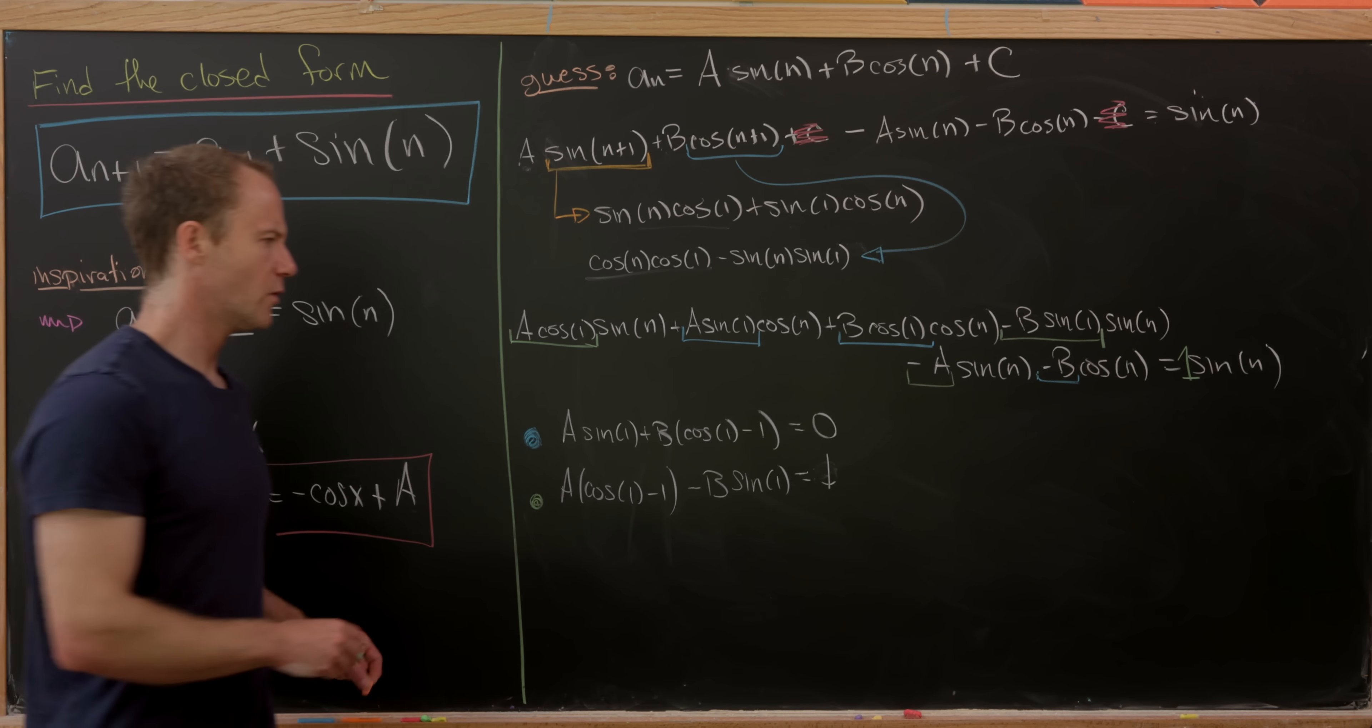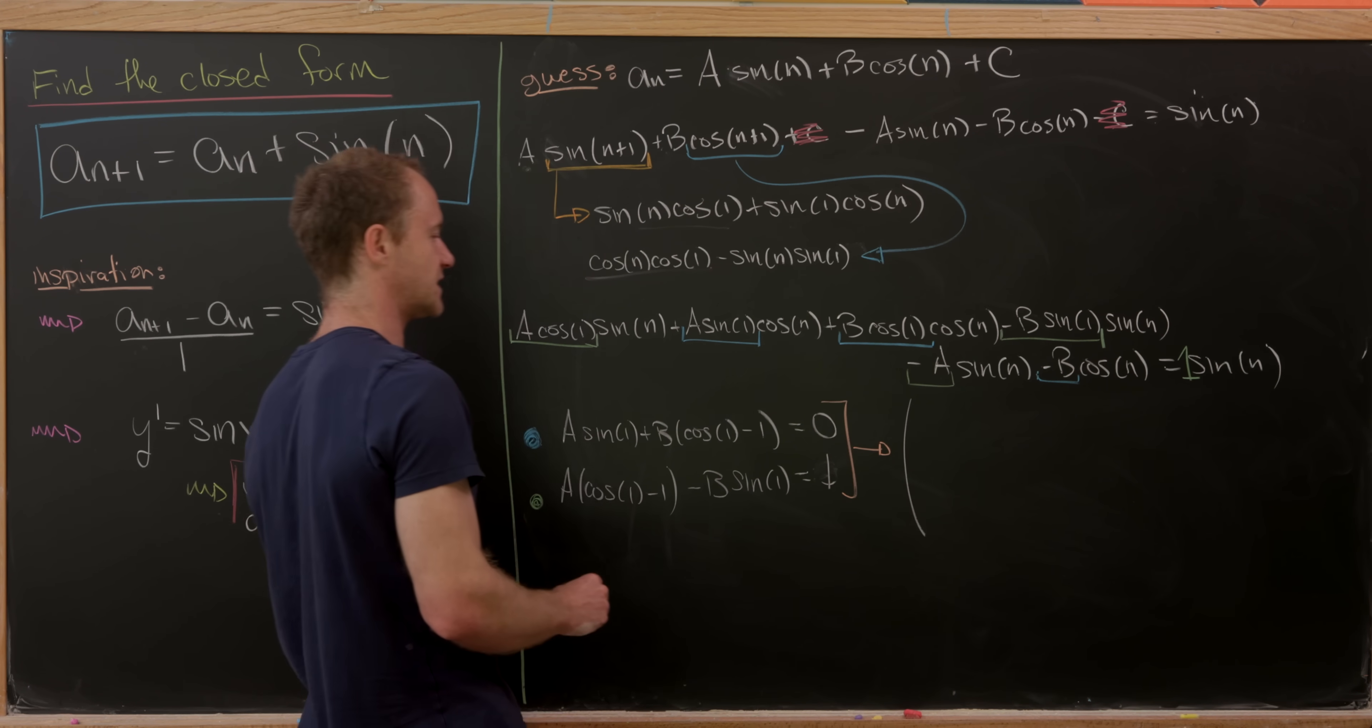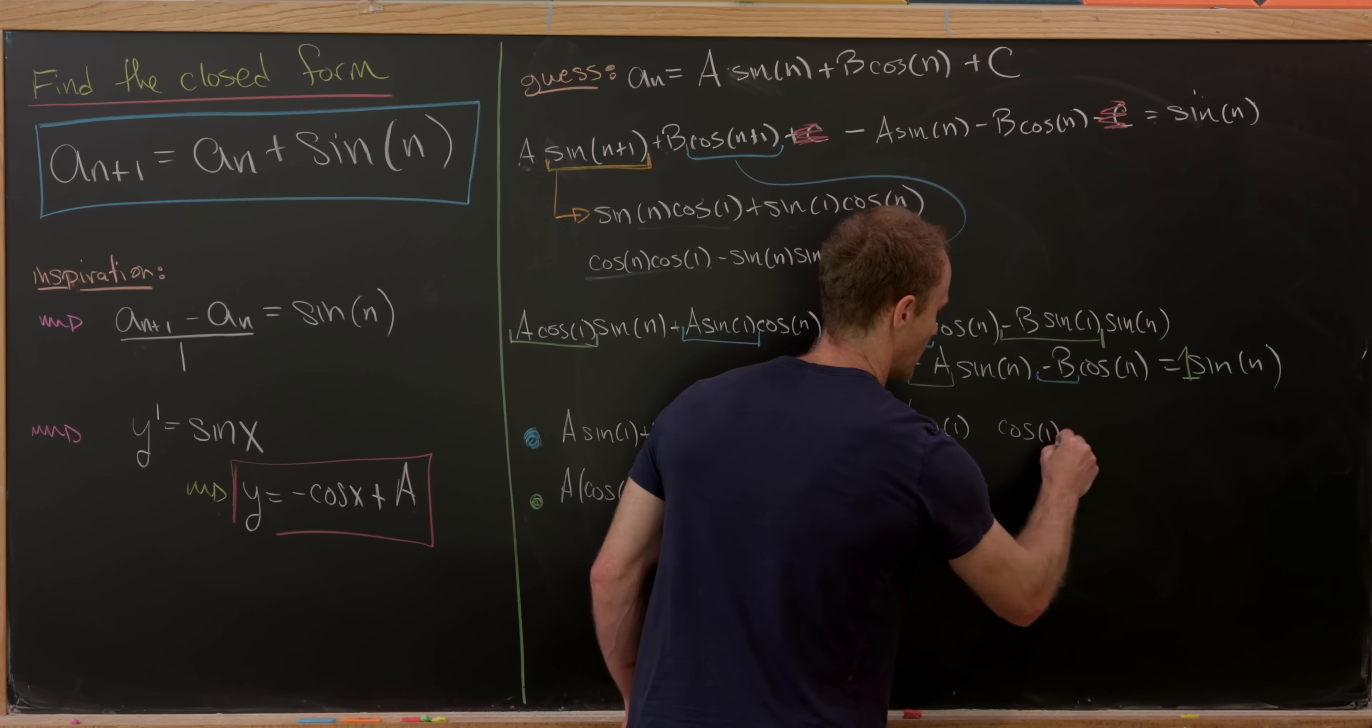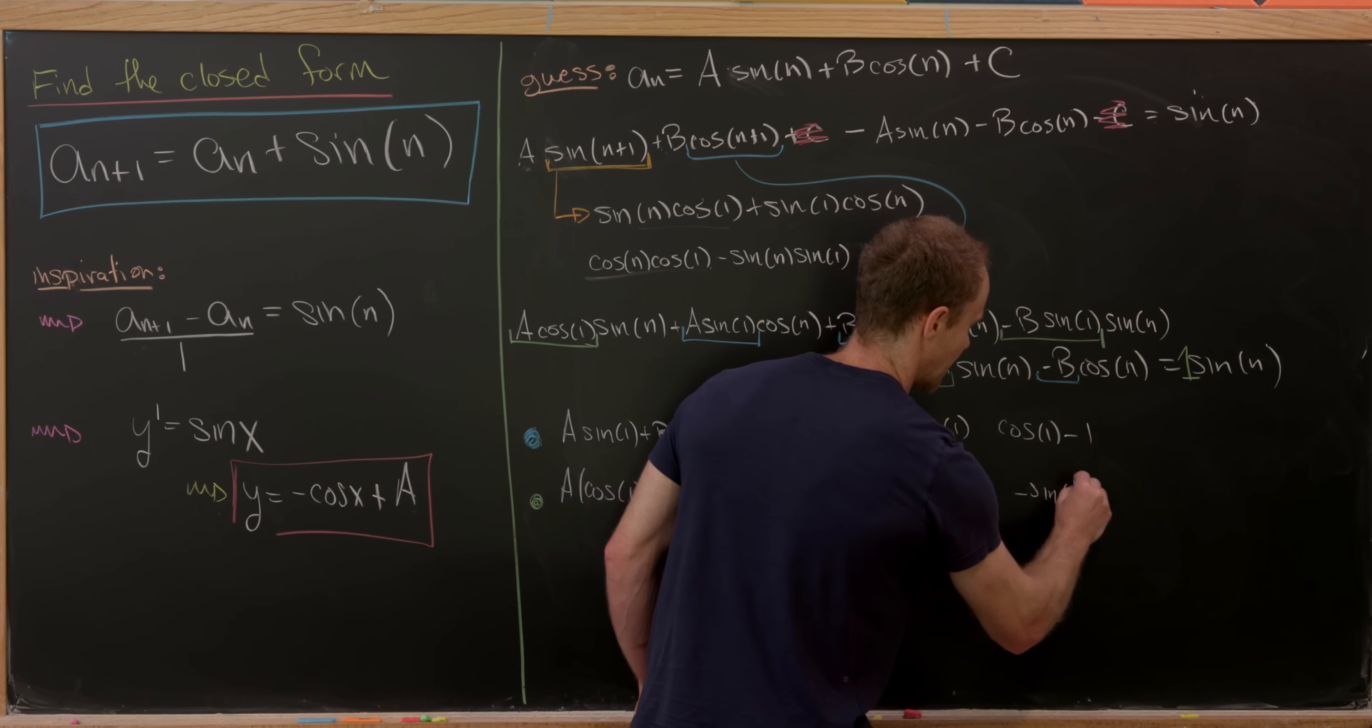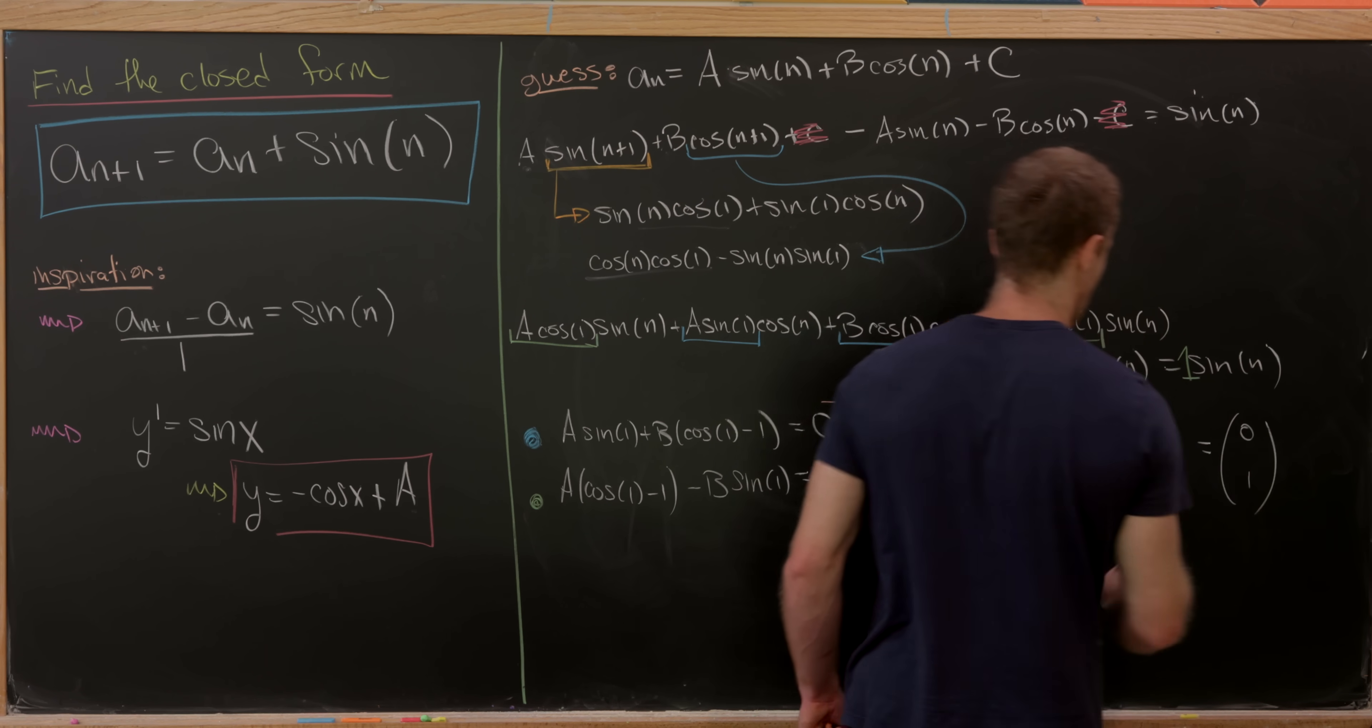But now we're going to pass this system of equations to a matrix vector equation. It's just going to make everything a little bit simpler to solve. So this is equivalent to the following matrix vector equation. So we'll have a sine 1 up here. And then a cosine 1 minus 1 here. A cosine 1 minus 1 here. And then a minus sine 1 here. So this multiplied into the vector of coefficients A and B must be equal to 0, 1.